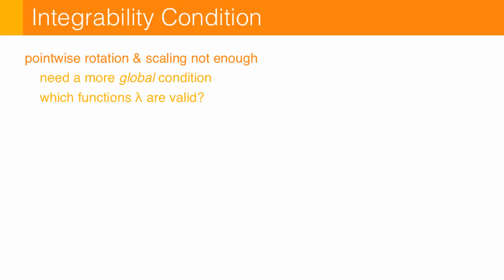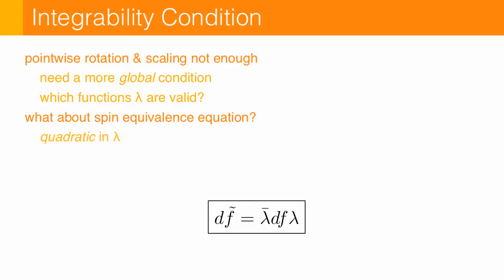So independently rotating and scaling at each point isn't good enough. What we need is a more global condition that tells us which transformations lambda are valid. And unfortunately, if we just naively interpret this spin equivalence condition as a constraint on lambda, then we end up with a system of quadratic equations. So lambda appears twice here. And so this is something that's going to be way too hard to solve directly.